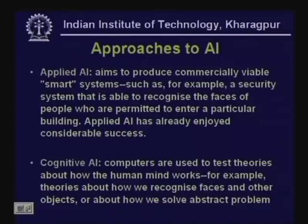Cognitive AI deals with studies where computers are used to test theories about how the human mind works. Cognitive scientists want to understand how humans act, behave, and think. These theories can be tested by building them into machines and watching how well the machines function using those theories.